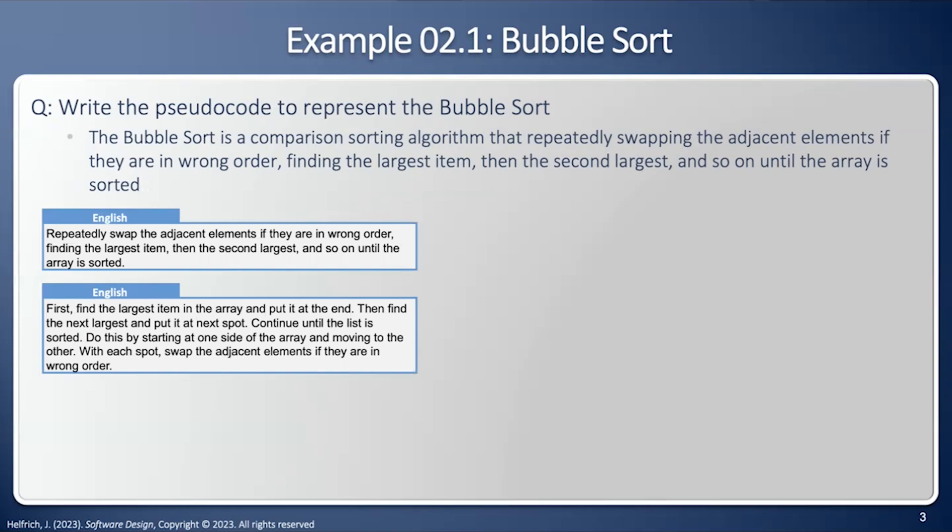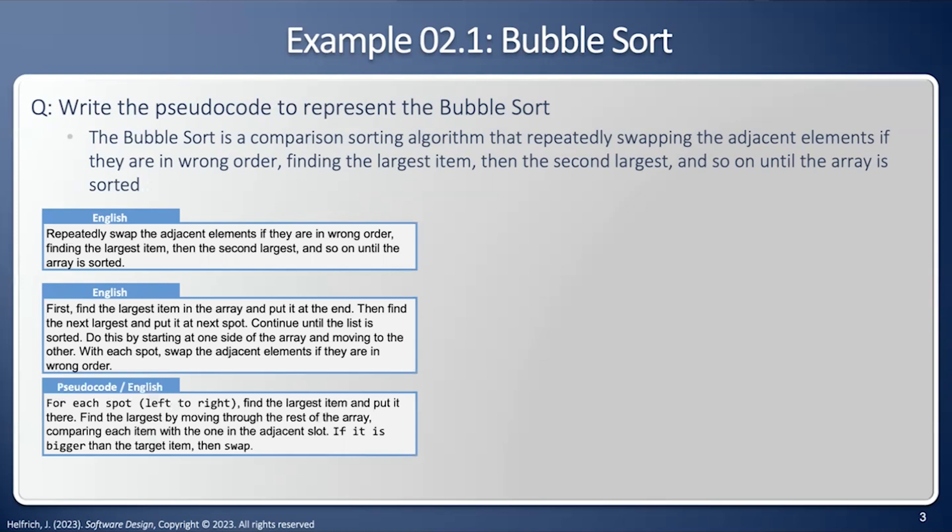First, the largest item in the array is put in the end, then find the next largest and put in the next spot and continue until the list is sorted. Do this by starting at one side of the array and moving to the other. With each spot, swap the adjacent elements if they are in the wrong order. Both those English descriptions say the same thing, but the second one is just a little bit more detailed. We're flushing out a little more detail.